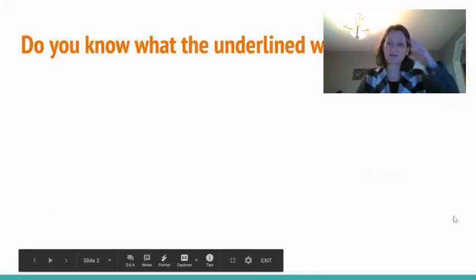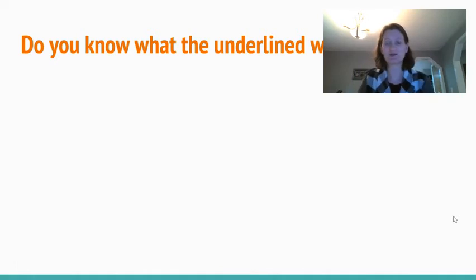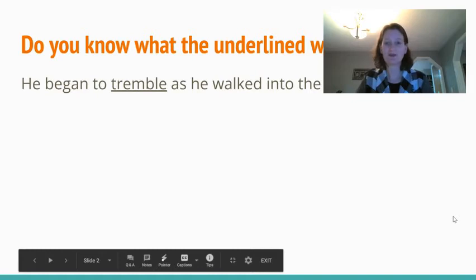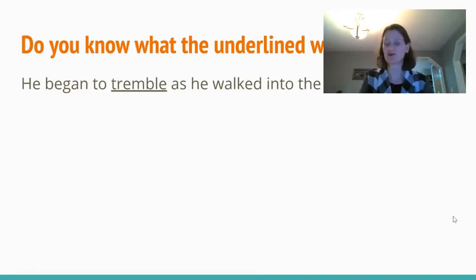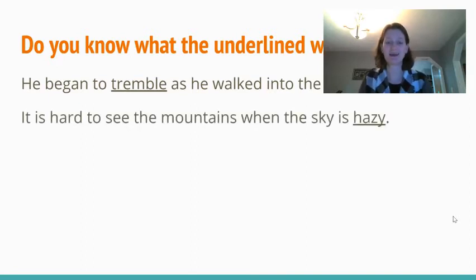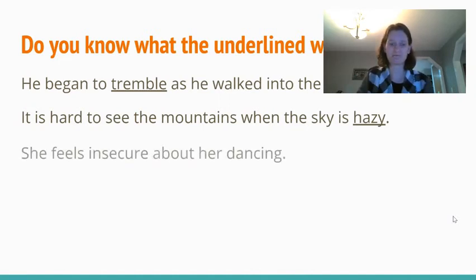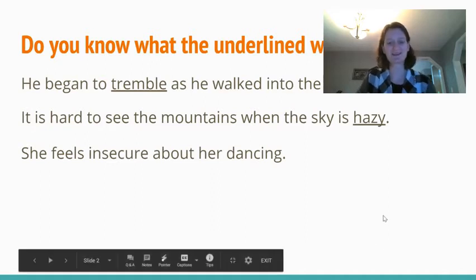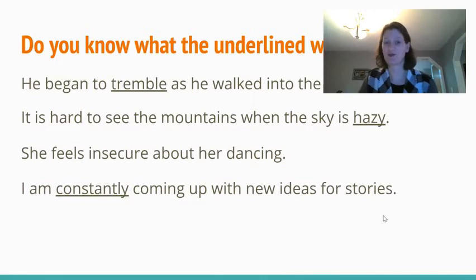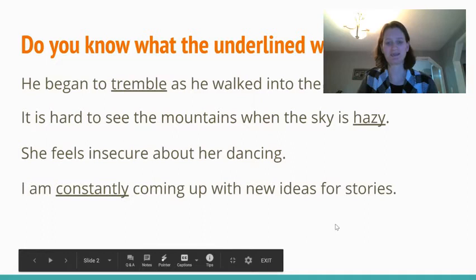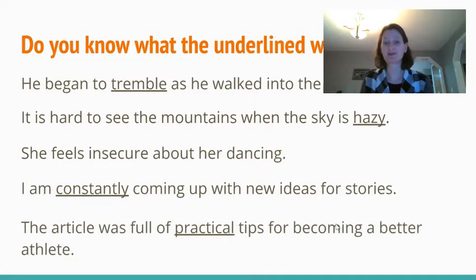As usual, we'll have our sentences with an underlined word, which is our word for the week. He began to tremble as he walked into the haunted house — think about what tremble could mean. It is hard to see the mountains when the sky is hazy — what could hazy mean? She feels insecure about her dancing. I am constantly coming up with new ideas for stories — what could constantly mean? The article was full of practical tips for becoming a better athlete. So: tremble, hazy, insecure, constantly, and practical are our five words for this week.